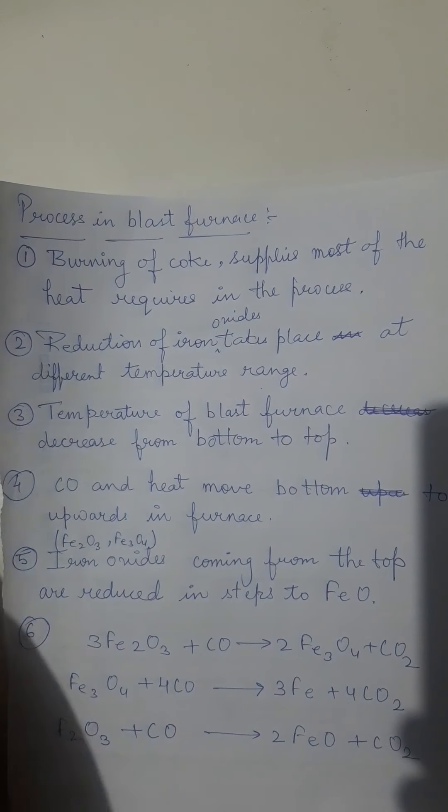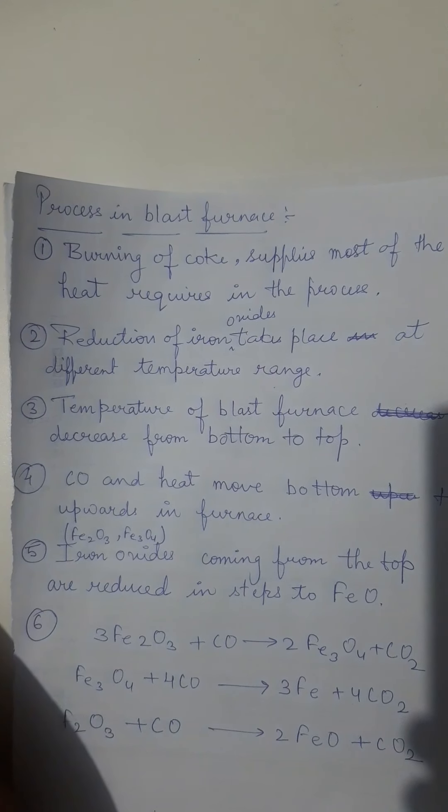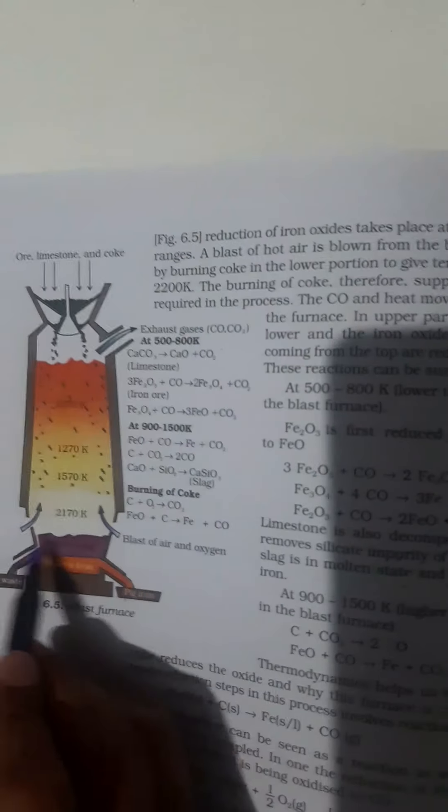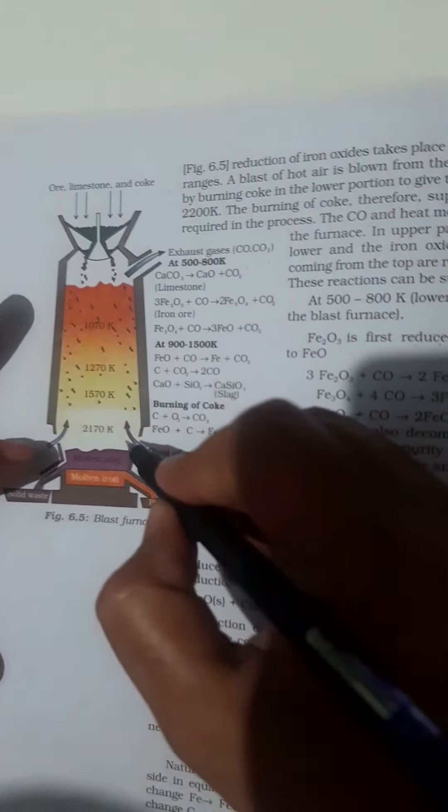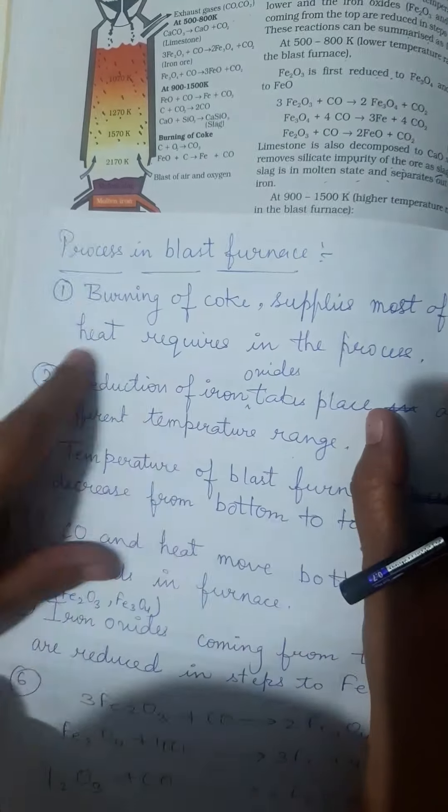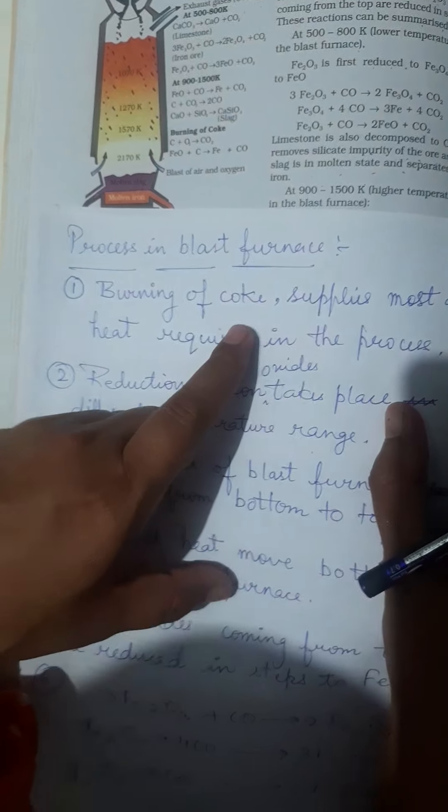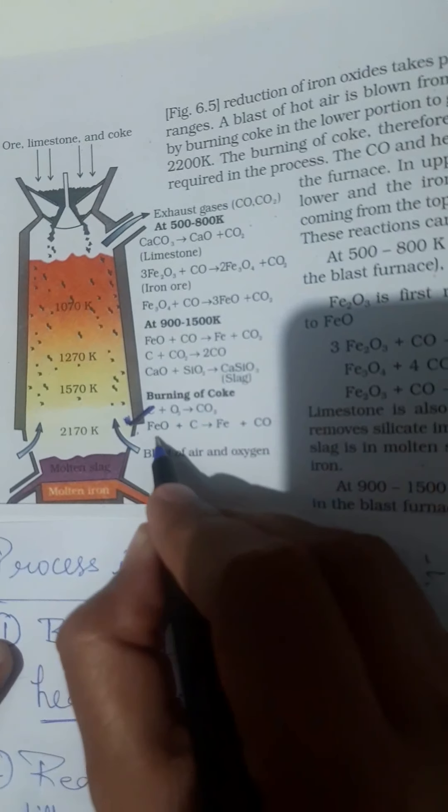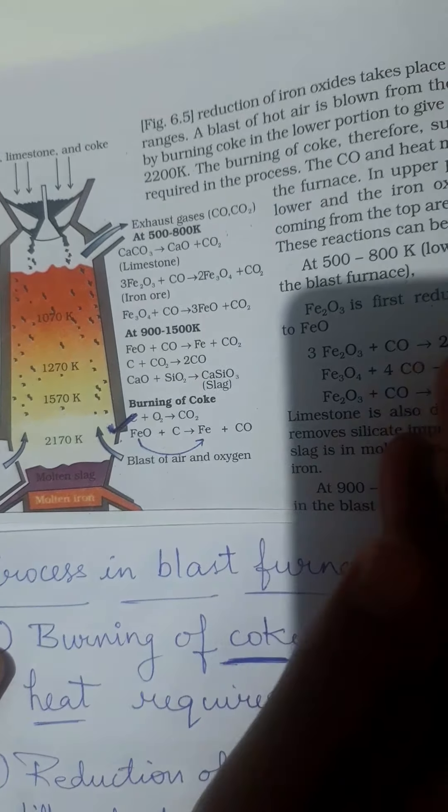The three points which we have to learn: first, the concentration of ore will take place by hydraulic wash because oxide ores are involved. Now you can see the diagram of blast furnace in your book on page number 160. Burning of coke supplies most of the heat required in the process. This burning increases the temperature of the blast furnace. Coke burns and gives heat which is useful to convert metal oxide into metal.